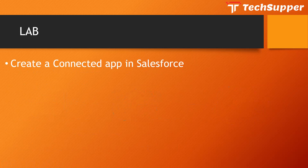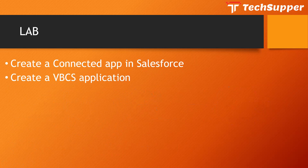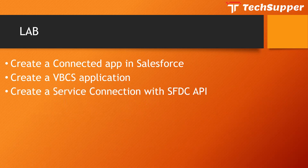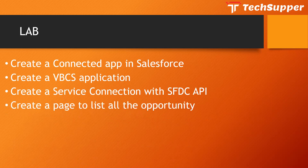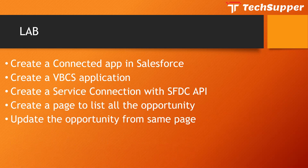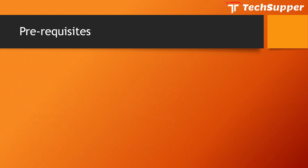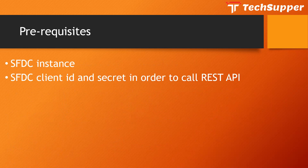In this video we are going to create a connected app in Salesforce, which will give us a client ID and client secret. This client ID and secret will be used with the REST API over Salesforce to interact with the application. Then we create a VBCS application with a service connection to the SFDC REST API, and finally build a page to list and update opportunities. Prerequisites: an SFDC instance, SFDC client ID and client secret, and a VBCS instance.